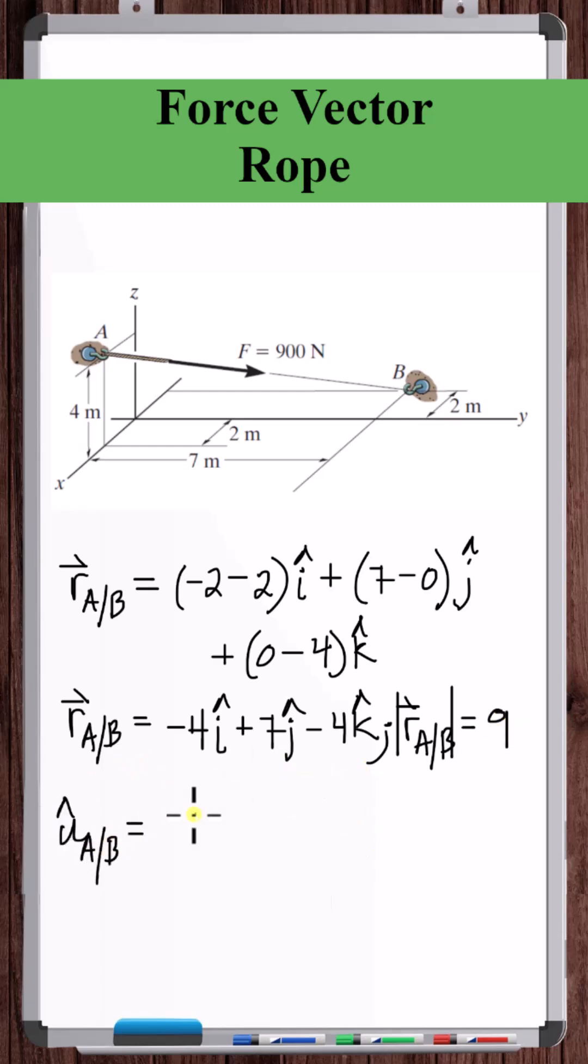Divide this position vector by 9 to get the unit vector from A to B. So that's the unit vector in the direction of this 900 newton force. Now we just need to multiply 900 times this unit vector to get the force vector.